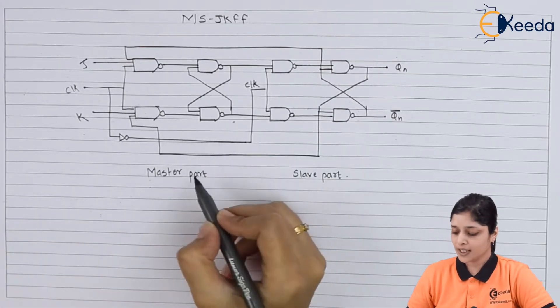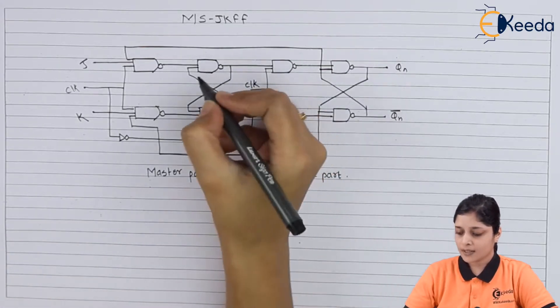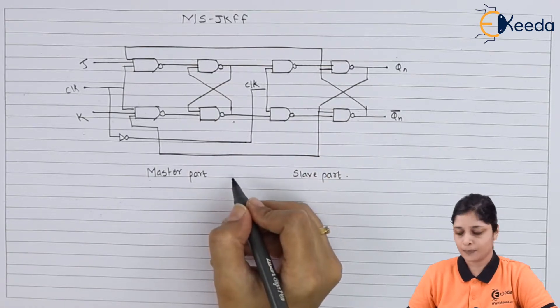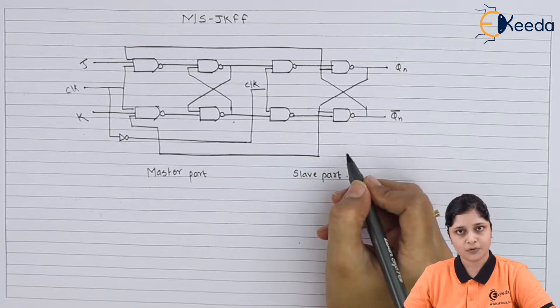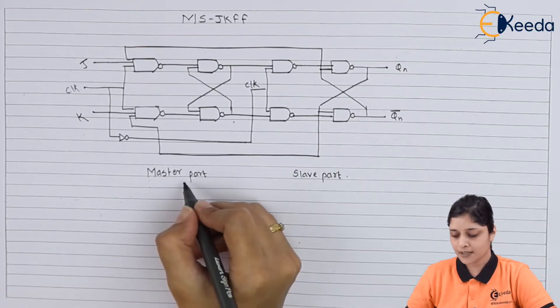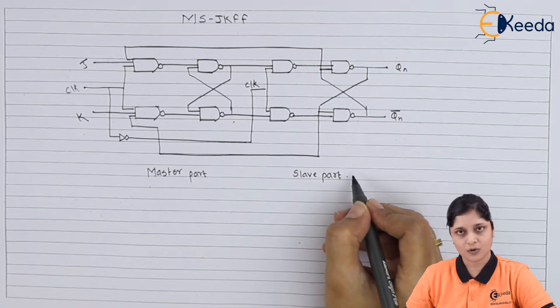If you see here the diagram, this is the first part of JK flip-flop, this is the second part. Two JK flip-flops we have used here. So this part is called the master side and this part is called the slave side.